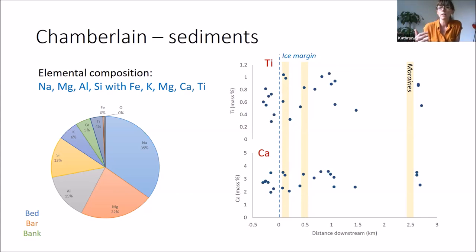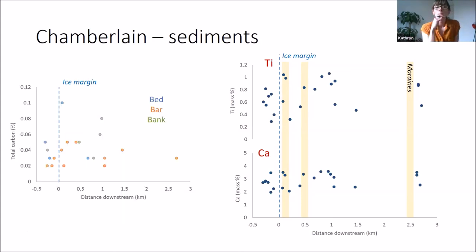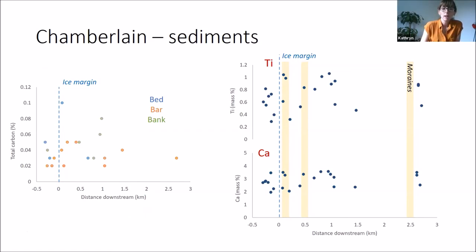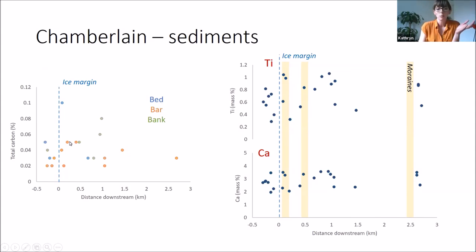A quick summary of the Disco data: slightly different elemental composition coming out of the bedrock — a bit more exciting than at Station Nord. For calcium and titanium we were able to access the subglacial conduits as they come out of the ice. Unlike at Villam, there isn't really a clear trend; it's just bumbling along — no obvious concentration or depletion of elements as we move downstream. For total carbon the signal is also quite complicated across bed, bar, and bank settings.